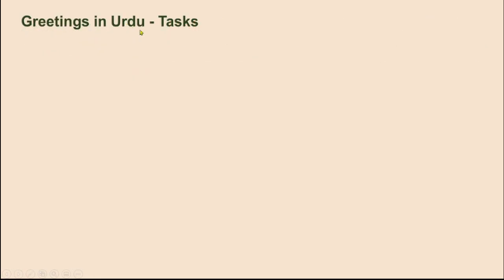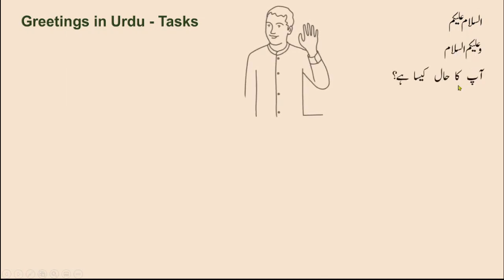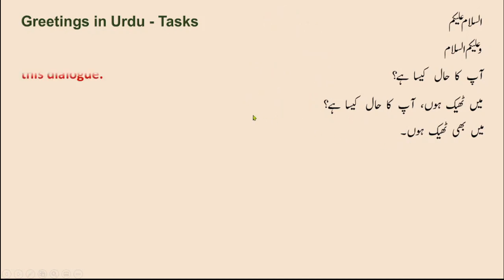We're going to do some tasks now. But before we do the tasks, we're going to do this dialogue once more. Assalamu alaikum. Wa alaykum asalaam. Aapka haal kaisa hai? Main thikun. Aapka haal kaisa hai? Main bhi thikun. Now find a partner and practice this dialogue — you can be person one and your partner can be person two, then swap your roles.